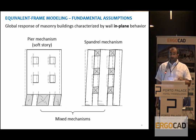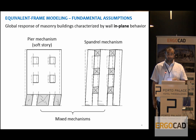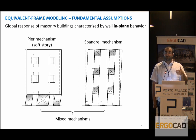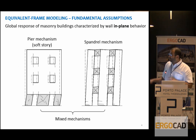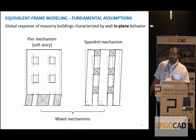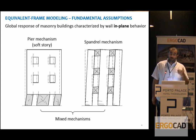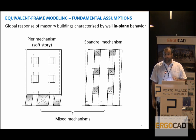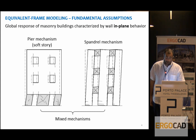We end up with a global model that can represent the behavior of masonry walls in terms of deformation of their elements — piers and spandrels. Here are represented the two extreme mechanisms: the first is a soft-story mechanism with weak piers, the second is a spandrel mechanism with weak spandrels and strong piers. Usually we have a combination of them in the actual in-plane response of masonry walls.